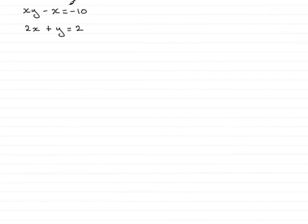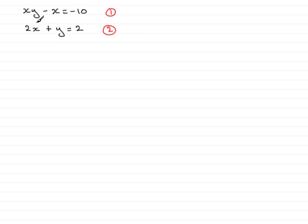You'll notice in this simultaneous equation that there's an xy term. And when you have an xy term, you need to use the method of substitution. So in the usual way, we number the equations 1 and 2. We take the simpler of the two equations — in this case, the second equation — because it hasn't got any xy terms; it's just a linear equation with x to the power 1 and y to the power 1.